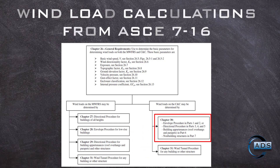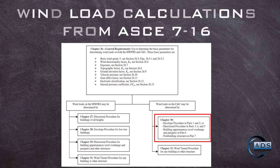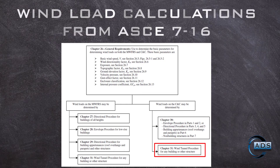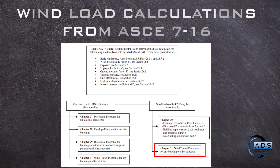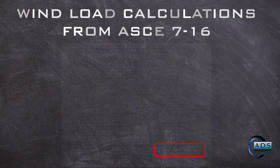Chapter 30 covers wind load calculations for components and cladding (C&C) using directional and envelope procedures, and chapter 31 covers wind load calculations for C&C using the wind tunnel procedure.